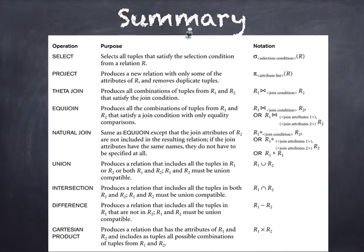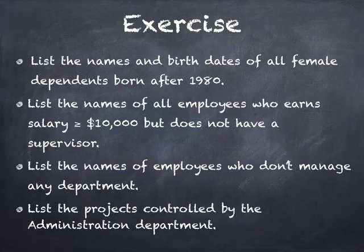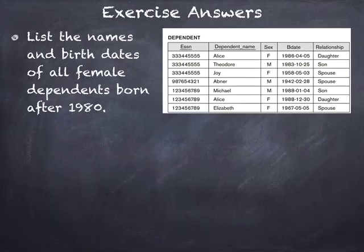The purpose is to test how far you understand and can apply relational algebra exercises on your own. There are four sets of exercises available. The first one says: list the names and birth dates of all female dependents born after 1980.